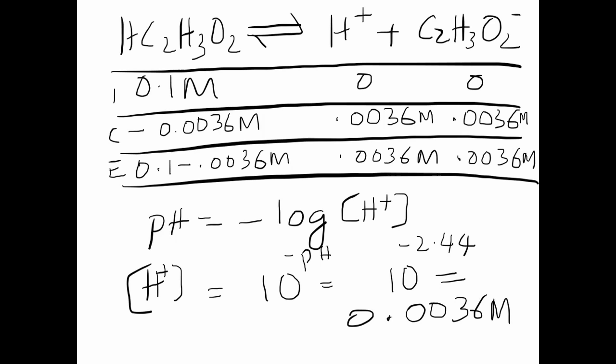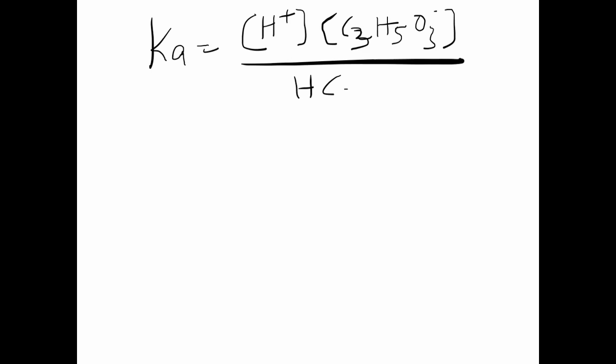Now we have the values required for substituting in the Ka expression to get the value of the dissociation constant of the acid. Substituting the values in the Ka expression: Ka equals [H+] times [C3H5O3-] divided by [HC3H5O3], from the ICE table that we generated earlier.